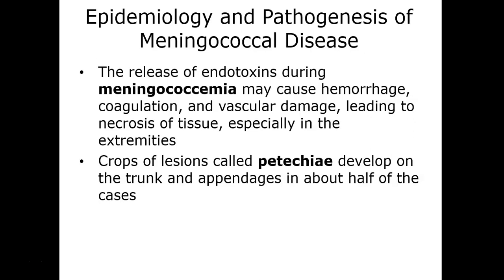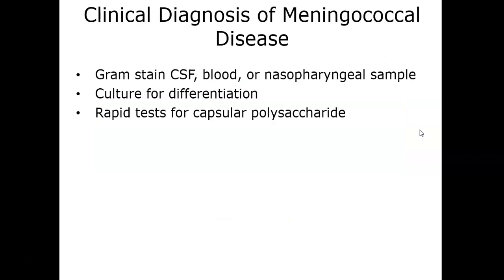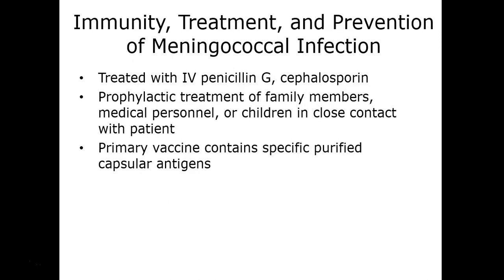Meningococcal meningitis is diagnosed through a lumbar puncture, inserting a long needle between vertebrae to withdraw a sample of cerebrospinal fluid — which should normally be clear and cell-free — and performing a gram stain looking for gram-negative diplococci. Treatment usually involves penicillin and cephalosporins. There is a vaccine containing antigens located on the capsule to boost immunity against this organism.